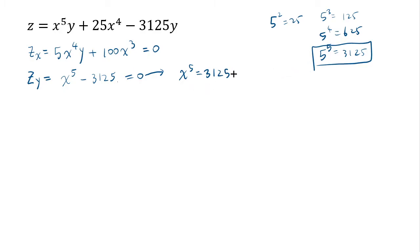So you see that x would be 5th root of 3125, which means it's going to be 5. So that's what you get.